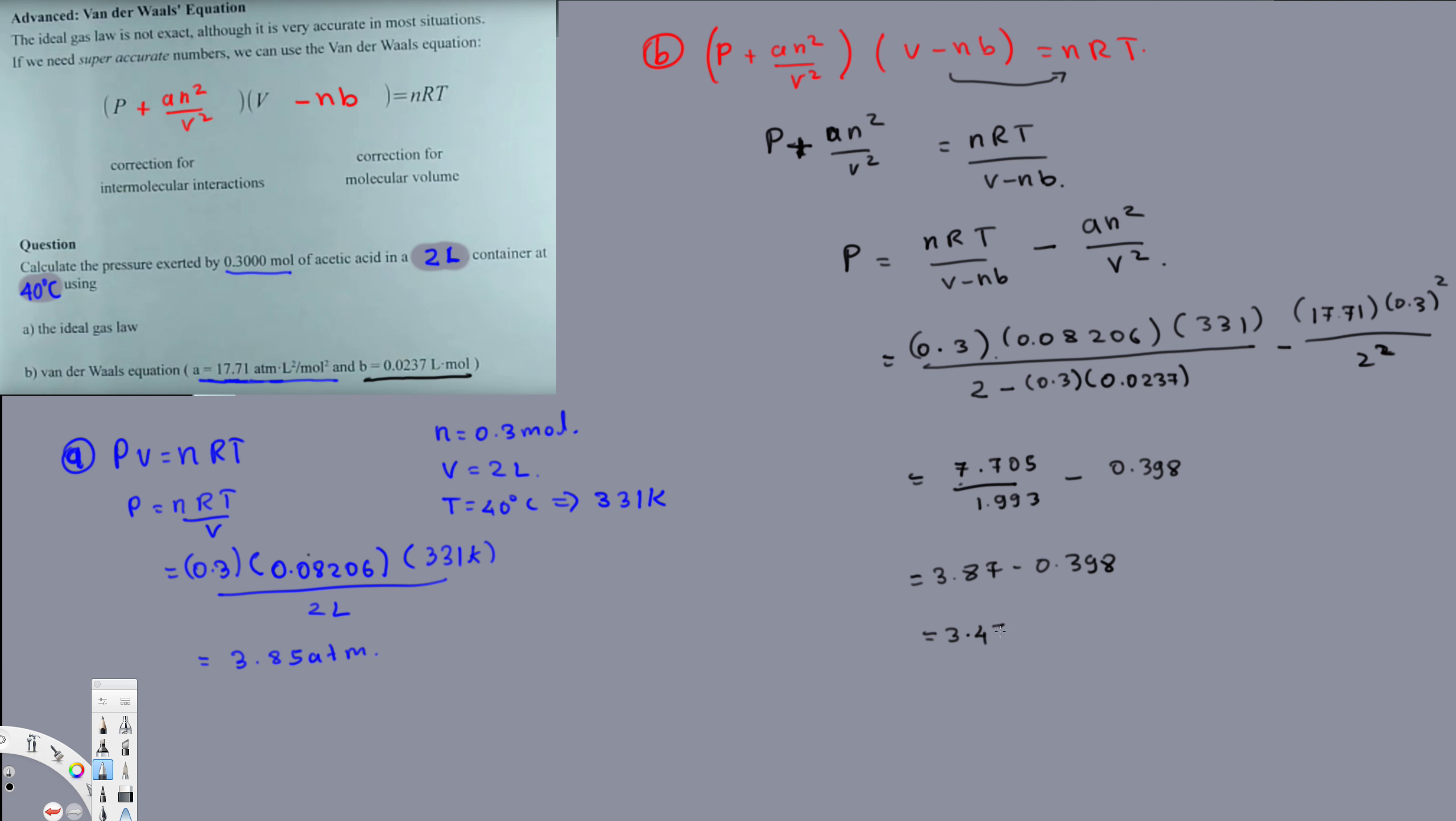We can simplify this one furthermore, that will give us 3.87 minus 0.398, and that gives us 3.47 ATM. If you see there is a difference. When I use ideal gas law we have 3.85, when I use van der Waals law we are getting this one. But this one is more accurate. That's why we have error with ideal gas law because we assume so many things to avoid these factors A and B.